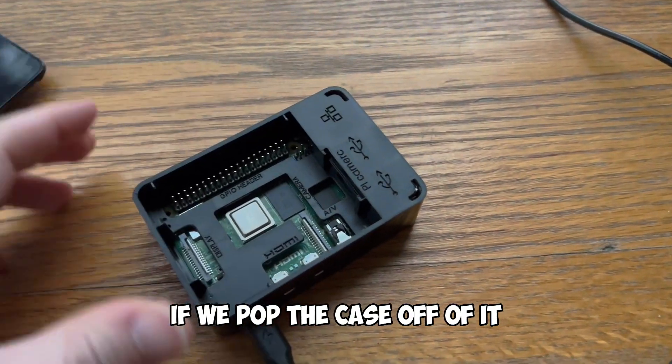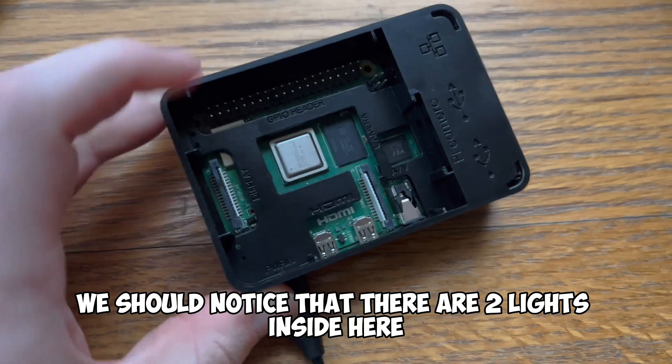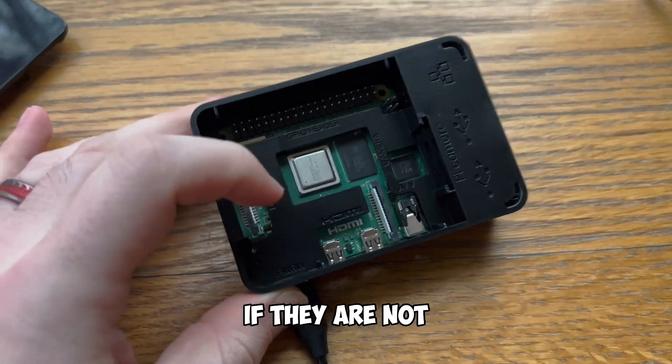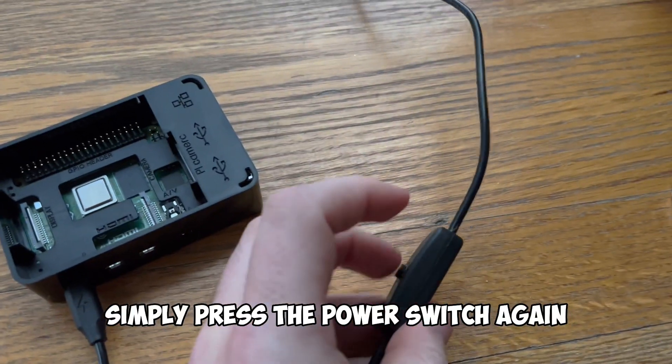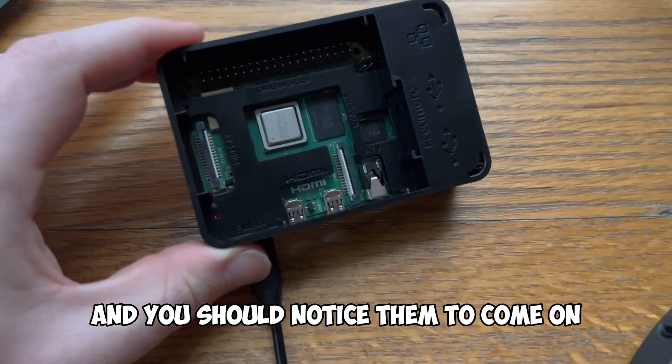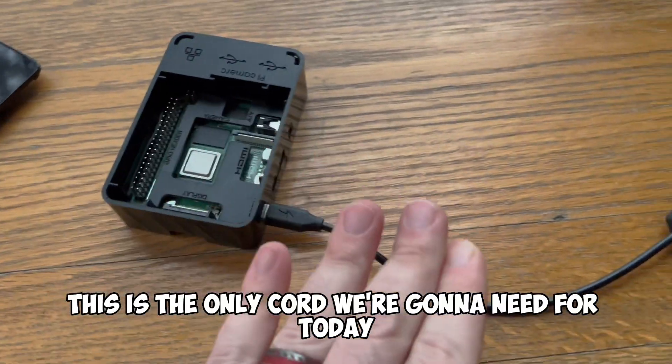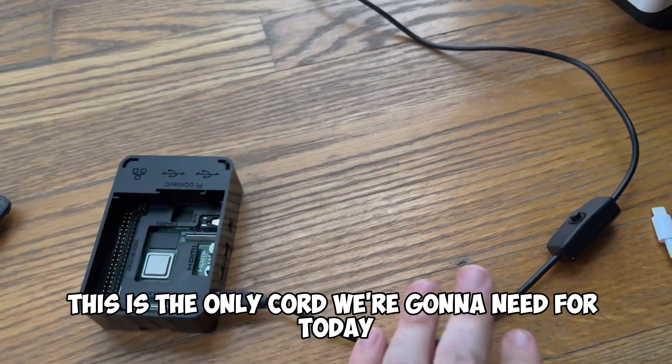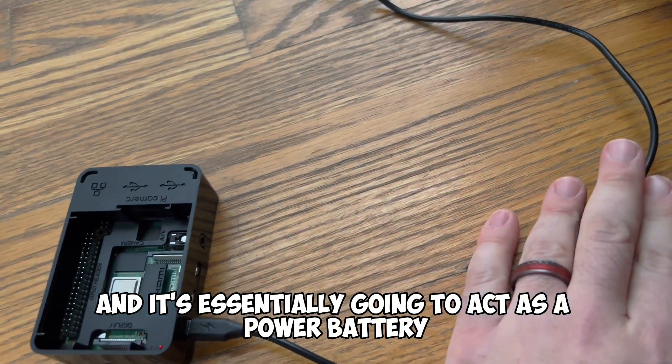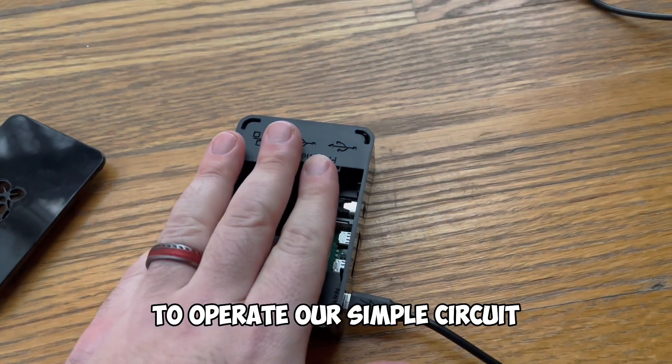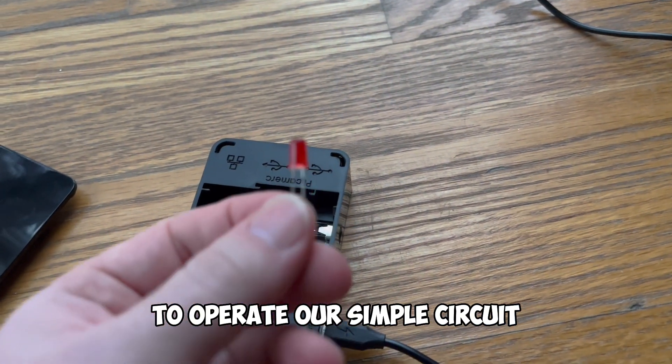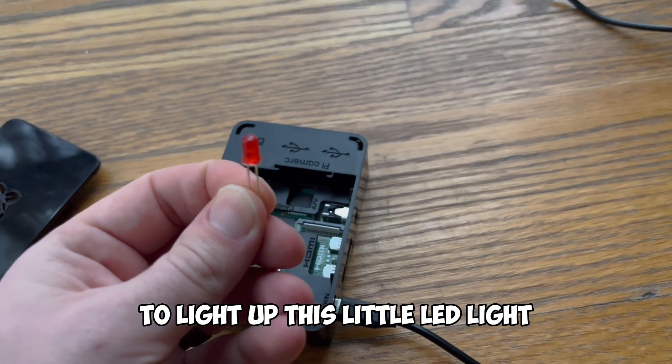If we pop the case off of it we should notice that there are two lights inside here. If they are not simply press the power switch again and you should notice them to come on. You can see that it's powering up right now. This is the only cord we're going to need for today and it's essentially going to act as a power battery to operate our simple circuit to light up this little LED light.